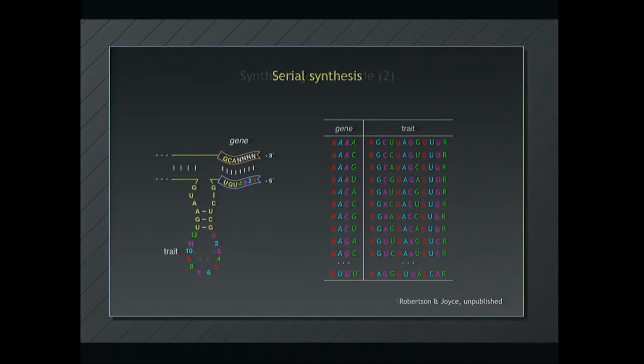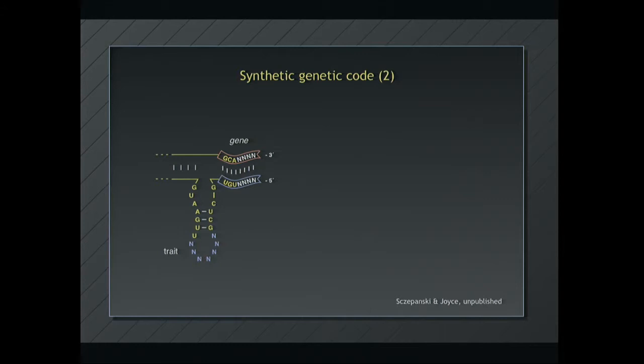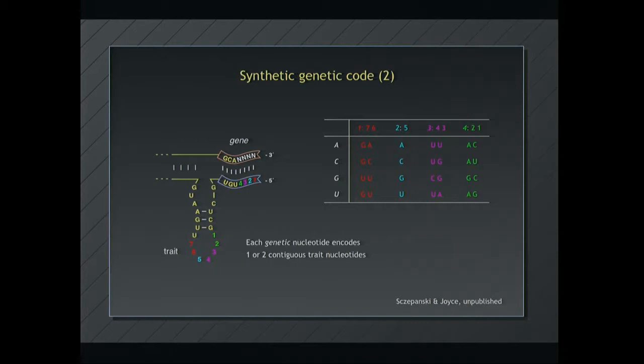Now here's another code. In this case, we have four random nucleotides in the gene, and we have seven random nucleotides in the trait. So wait a minute, four to seven, how's that going to work out? Well, here's the rule. Each genetic nucleotide encodes either one or two, in this case, contiguous trait nucleotides. These are issues that are sort of up for grabs until we learn what makes a good code for this molecule and for RNA space. And here's the particular lookup table. So position one encodes position seven and six. Position two maps right to position five, and it does it in a one-to-one fashion just for fun. But position one, an A here means a GA, a C means a GC, and so on.